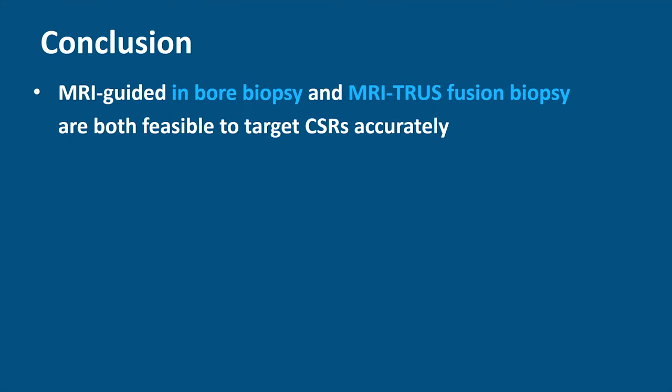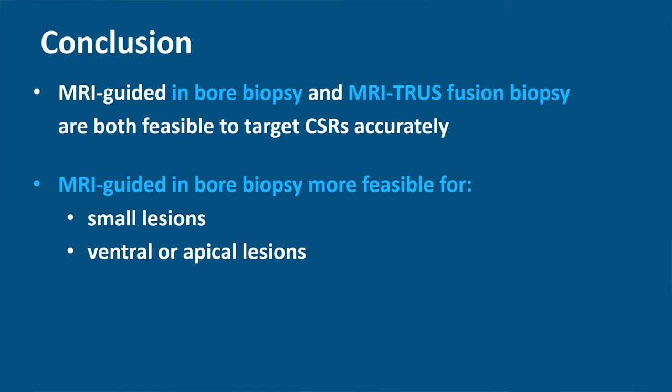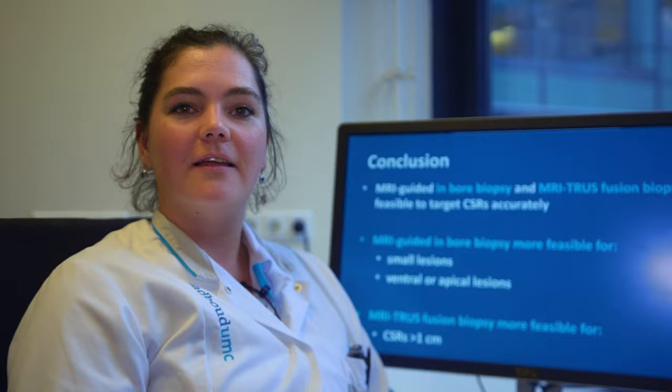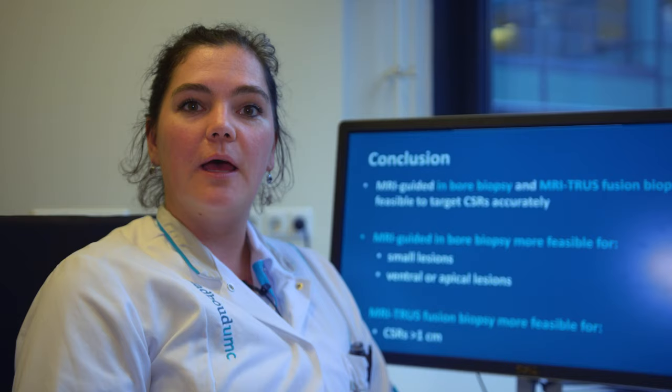To conclude: MRI-guided in-bore biopsy and MRI fusion biopsy are both feasible to target cancer suspicious regions accurately. MRI-guided in-bore biopsy is more feasible for small lesions and ventral or apical lesions. MRI fusion biopsy is more feasible for cancer suspicious regions larger than one centimeter. Thank you for watching — I hope you learned something today about MRI-guided biopsy. Please also watch the other videos.